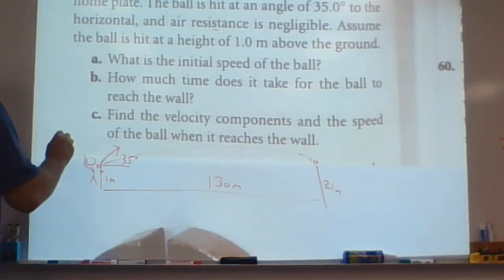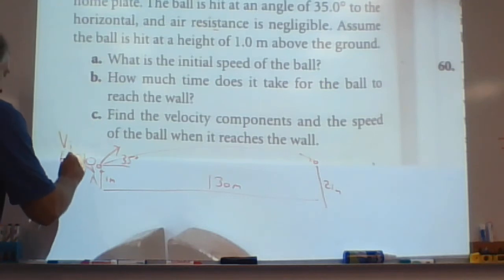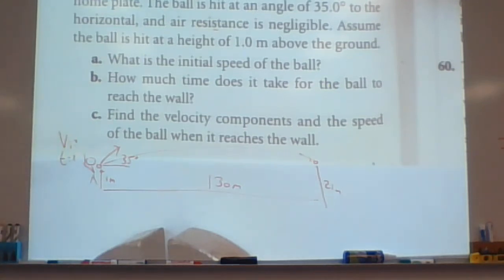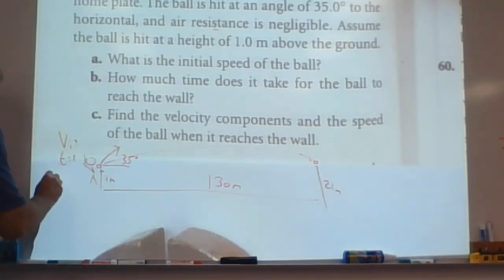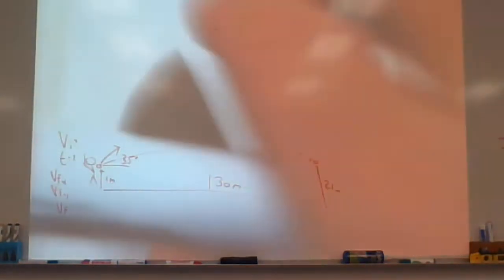I'm going to start with the horizontal problem here. So let me close up some of this. I think we got everything we need. Well, let's make a list of what we want to know. We want to know the initial speed of the ball. So I want to know VI. I don't want to know VIX or VIY. I want to know VI. I also want to know how much time does it take for the ball to reach the wall. So I want to know T. And I want to know the third thing is, find the velocity components and the speed of the ball. So the third thing is I want to know VFX, VFY. And I want to know VF. So I got to find all the velocity components. So there's five answers on this question. That's five points. So be aware of that. This is a long question. It's worth a lot of points.